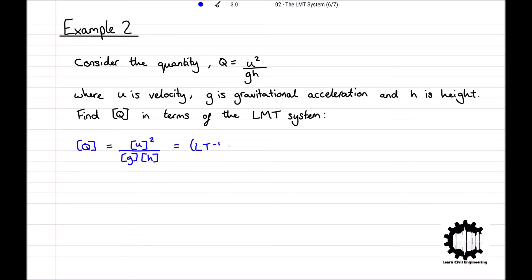In the last lecture, we derived that the dimensions for acceleration, or gravity in this case, are equal to LT to the power of minus 2, and then the dimensions for height is L.